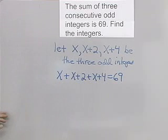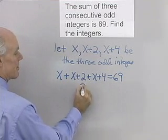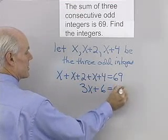So I have x, x plus 2, x plus 4 equals 69. I'll simplify this side, 3x plus 6 equals 69.